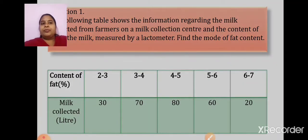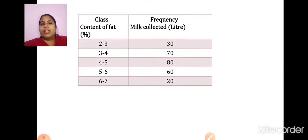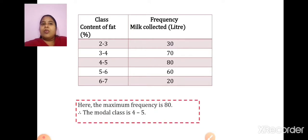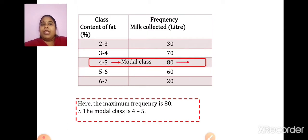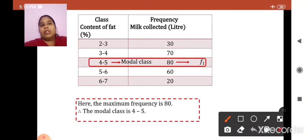Let us write this in a tabular column. The maximum frequency is 80, so the modal class is 4 to 5. Represent and highlight it in the table. The frequency of the modal class is nothing but F1. The frequency of the class just above the modal class will be F0. The frequency of the class just below the modal class will be F2.